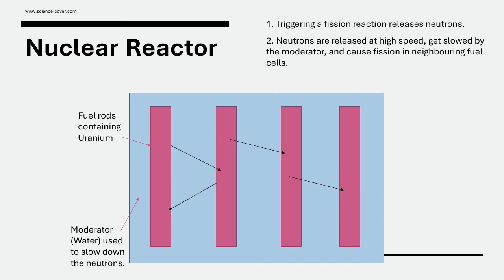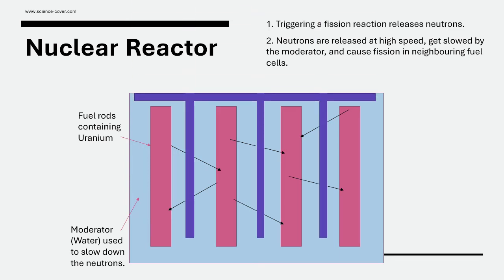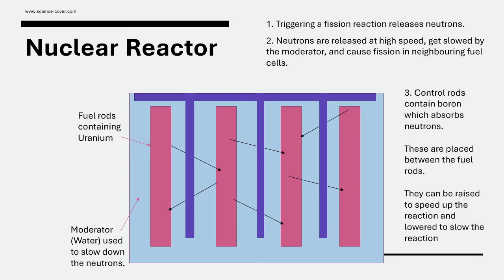We need to introduce something that allows us to control the reaction — this is the control rods. The control rods are made out of boron, and boron absorbs neutrons. We place these between the fuel rods, and they can be raised to speed up the reaction by exposing more of the fuel rod, or lowered to cover up the fuel rods and slow down the reaction. Depending on how far we push or pull the control rod, it helps us speed up and slow down the reaction.